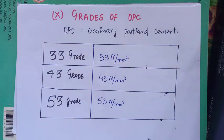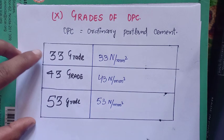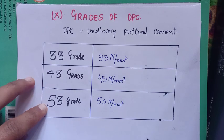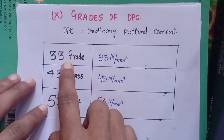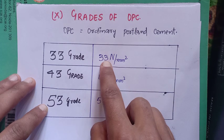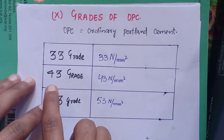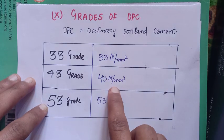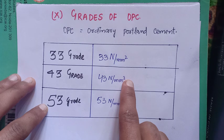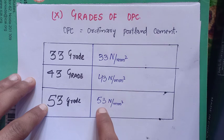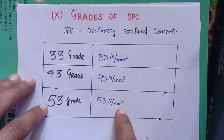We are having three different grades of cement: 33 grade, 43 grade, and 53 grade of cement. For 33 grade of cement, the characteristic compressive strength is 33 Newton per mm². For 43 grade of cement, the compressive strength is 43 Newton per mm². For 53 grade of cement, the strength is 53 Newton per mm².